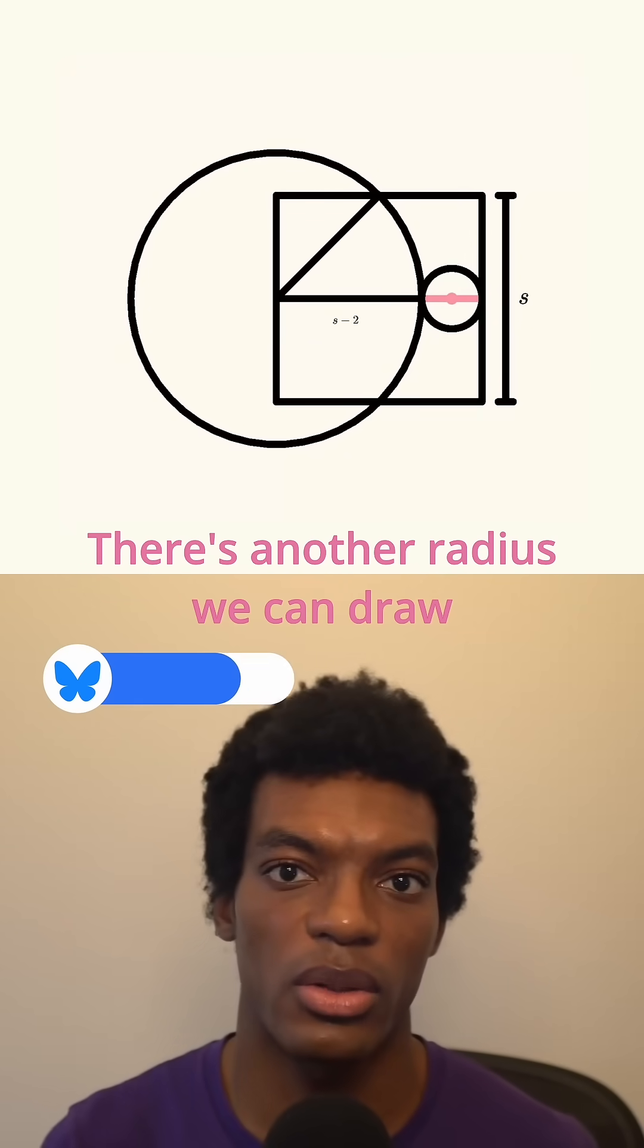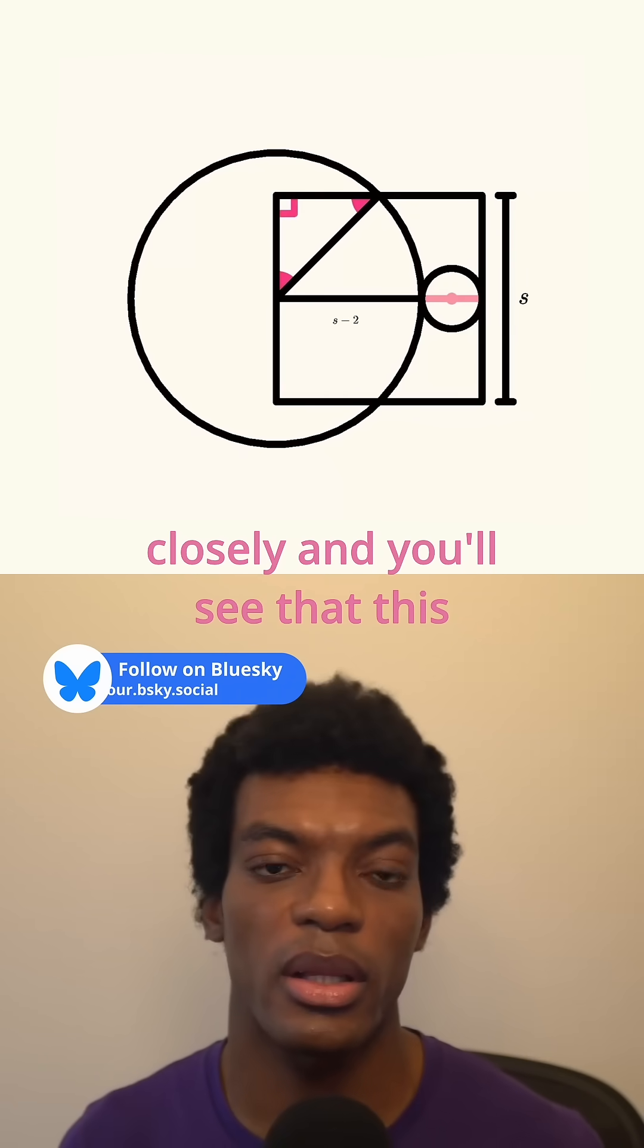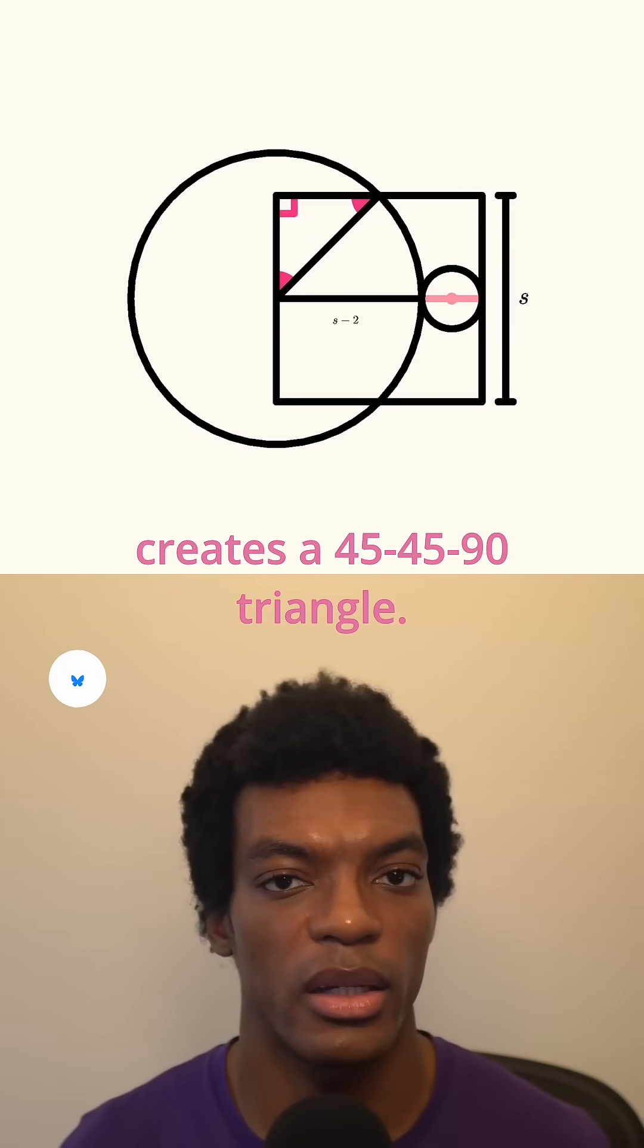There's another radius we can draw, from the center of the circle to the midpoint of the top side of the square. Look closely and you'll see that this creates a 45-45-90 triangle.